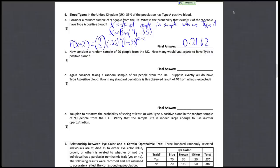Now let's consider a random sample of 90 people from the UK. How many would you expect to have type A positive blood? So the distribution changed a little bit. X is now binomial with 90, 0.35.